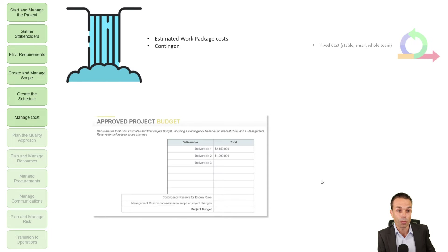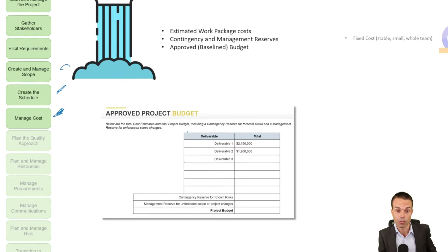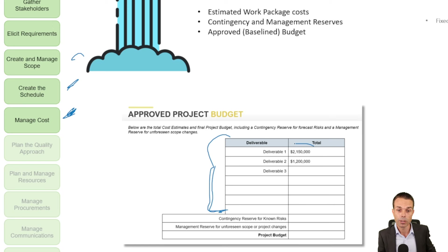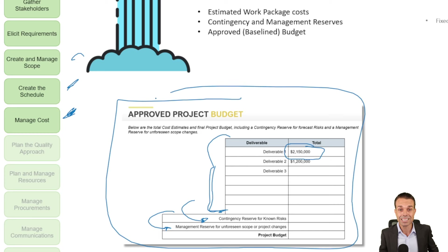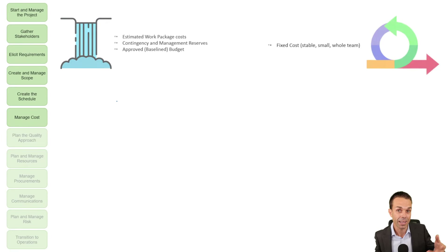Now that we've got scope and schedule we can look at the cost. In Waterfall we estimate the work packages — how much are they going to cost? We add contingency reserves for our risks and management reserves for any unforeseen scope, which gives us our approved baseline budget. If we make any changes to that, it needs to go through our change control process — the change management plan we discussed earlier.